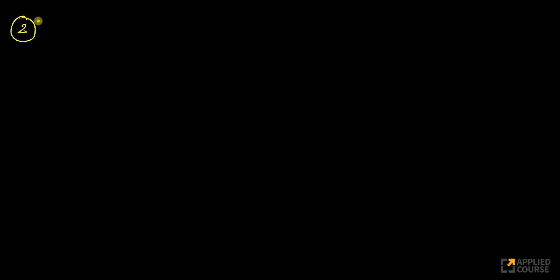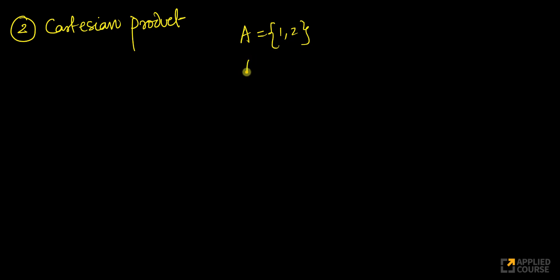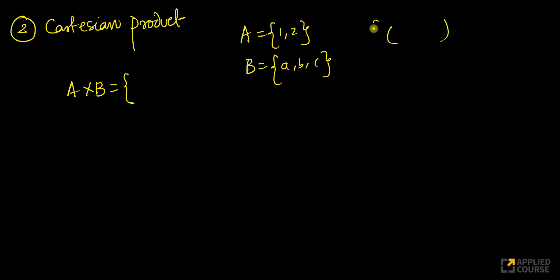The next concept is called Cartesian product — a very important concept that we will use a lot in theory of computation. Imagine if you are given two sets: set A which is {1, 2} and set B which is {A, B, C}. Then the Cartesian product A cross B is another set, but this set consists of pairs of elements. The first element of each pair comes from A and the second from B.